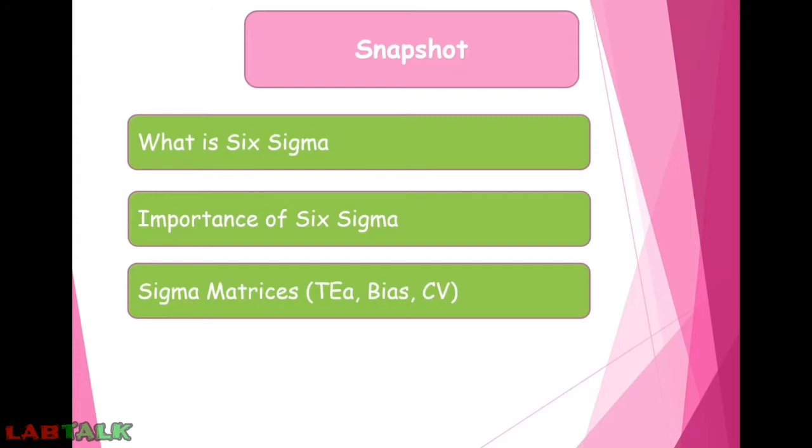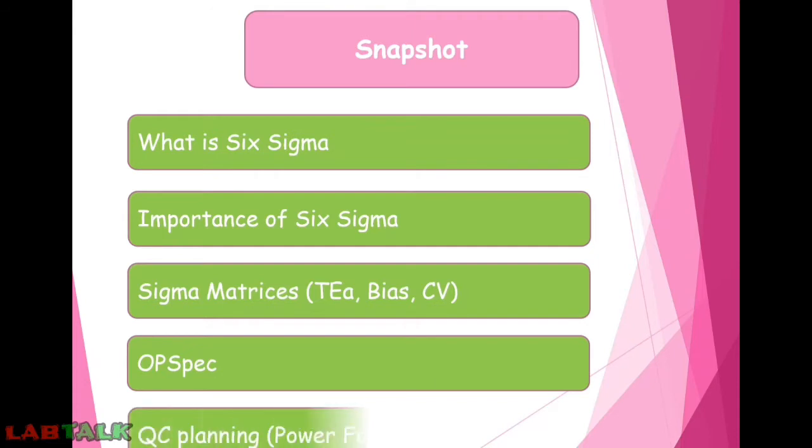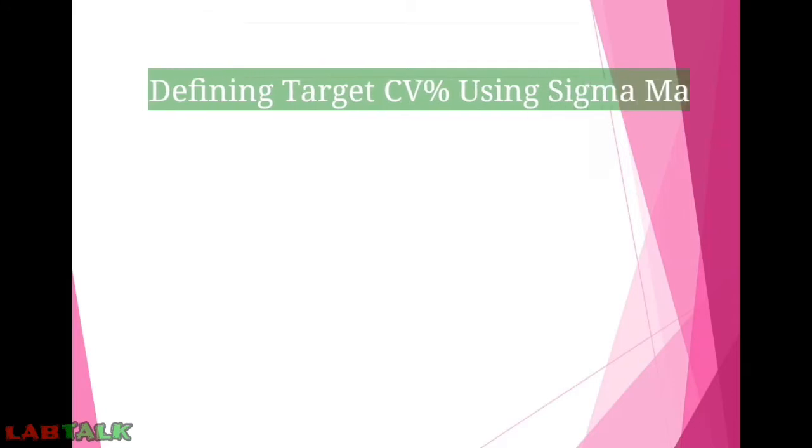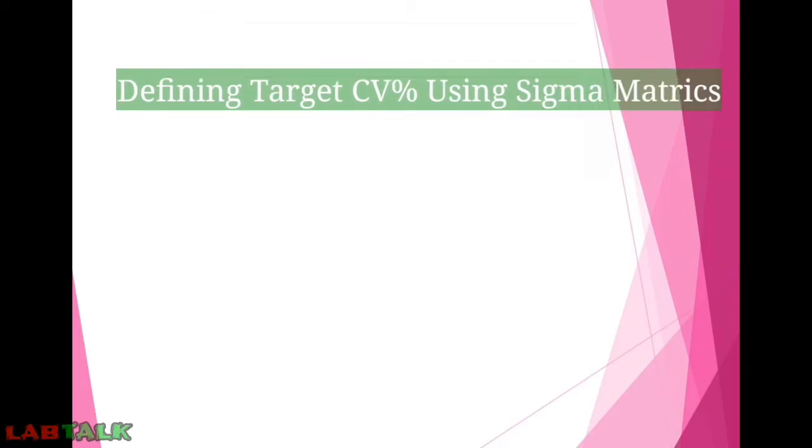what are the operational specification charts, QC planning or power function curve to find out the frequency of QC run and determine the QC planning. Finally, we will see how to define target CV percentage for each parameter and how to define world class performance using Six Sigma matrices.